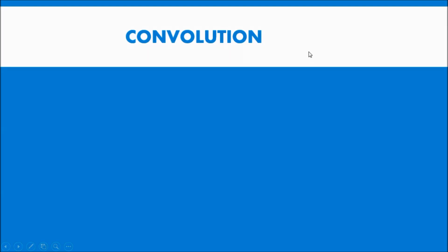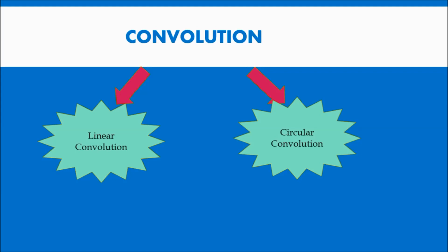Convolution. In the previous video we discussed convolution, which is useful for finding the output of a system based on the input given, x of n. The types of convolution are: first, linear convolution, and second, circular convolution.